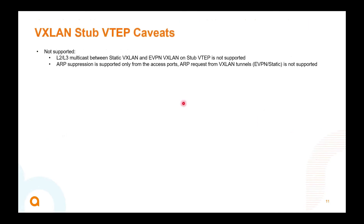Caveats — not supported: multicast L2 and L3 between the static and eVPN networks on the stub is not supported today. ARP suppression is also not supported. In order for ARP suppression to work, you need clients directly connected on the access ports on a switch. You cannot have ARP requests through a static tunnel and suppress them that way.